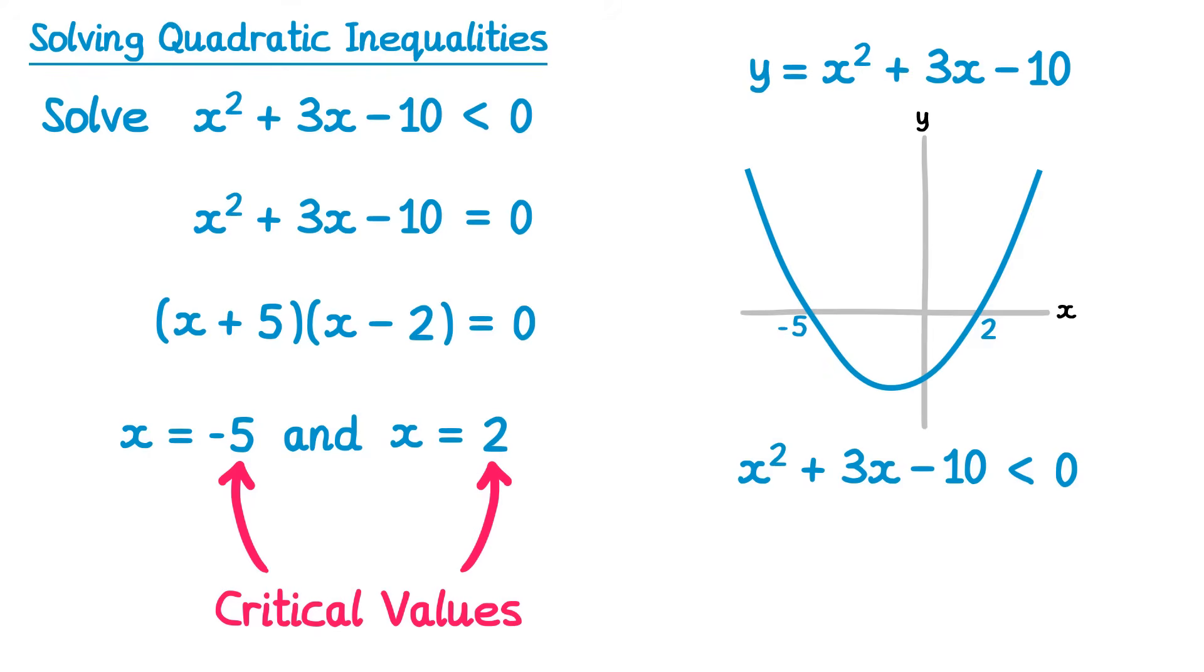Let's now consider our inequality again that we were trying to solve. If you substitute in the critical values, you'll see that they're solutions because they give 0. So if we start with 2, 2 squared plus 3 lots of 2, take away 10, gives 4, plus 6, and 4 add 6, take 10, is 0.